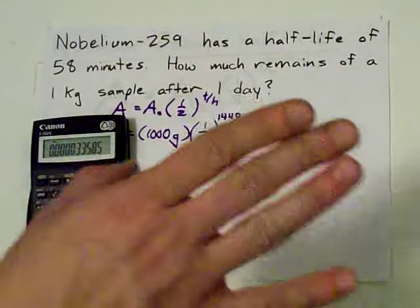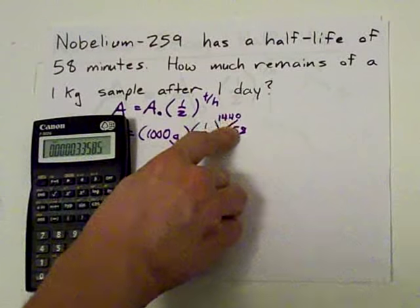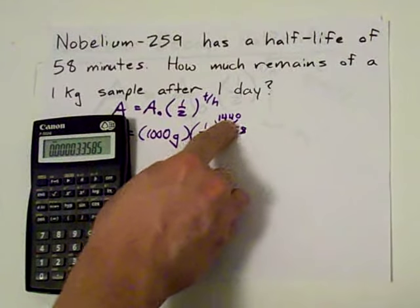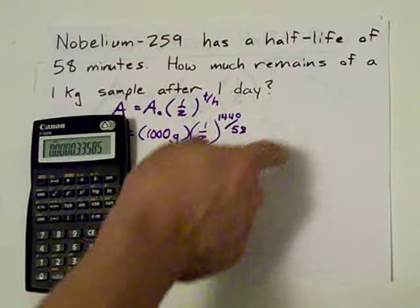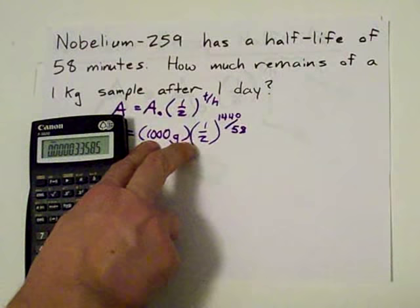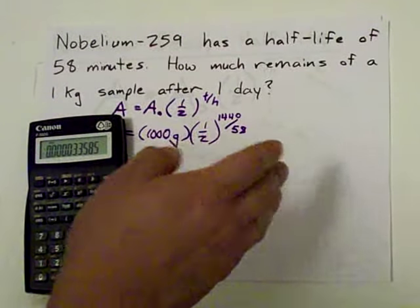See? Times it by 1,000. Guys, the biggest mistake I see students make here, you've got to do this division in the exponent first. Then do this exponentiation, 0.5 to the power of that number, and then multiply it by whatever your A-naught is. Don't multiply this by a half, then raise it to the power. Use BEDMAS. Don't be a fool.